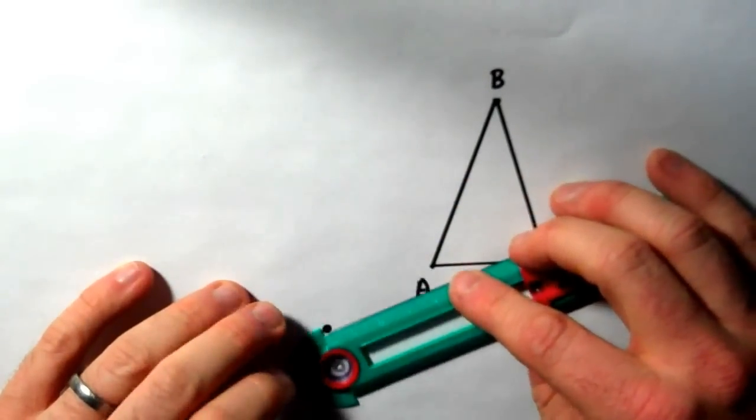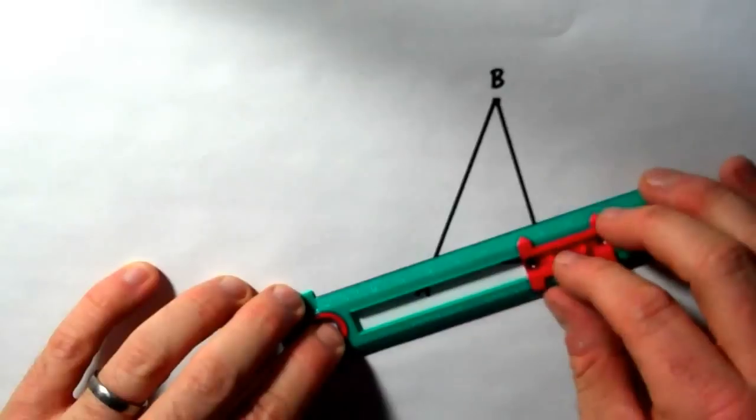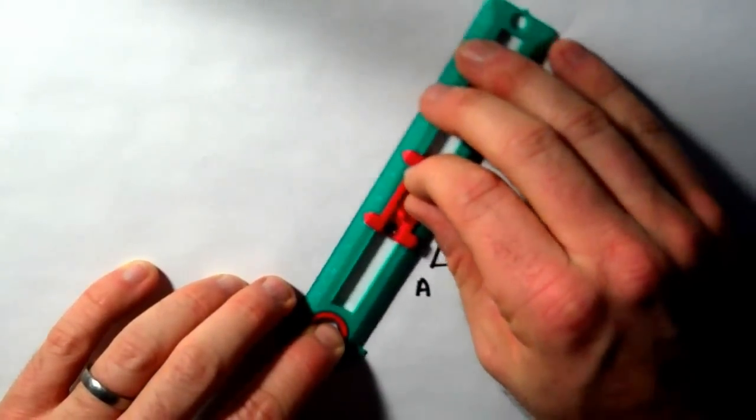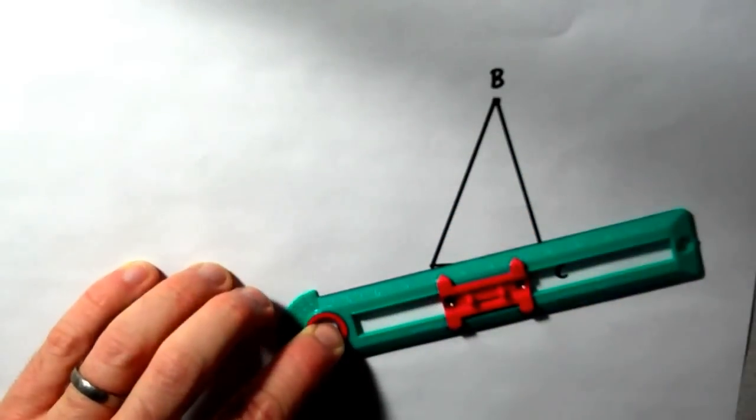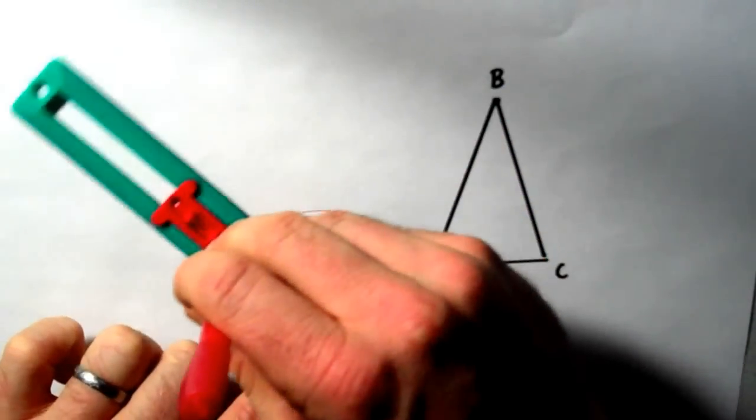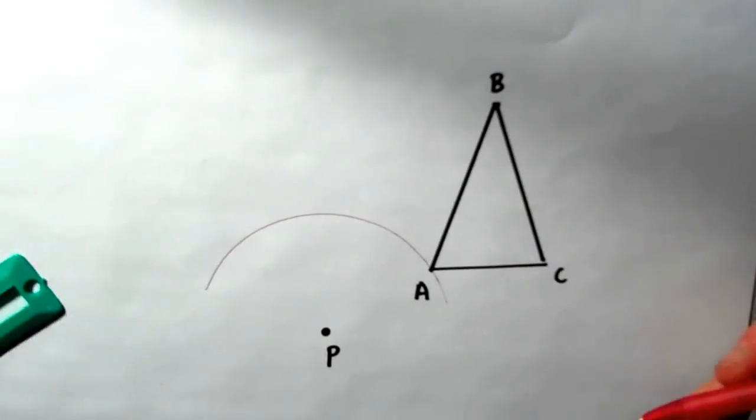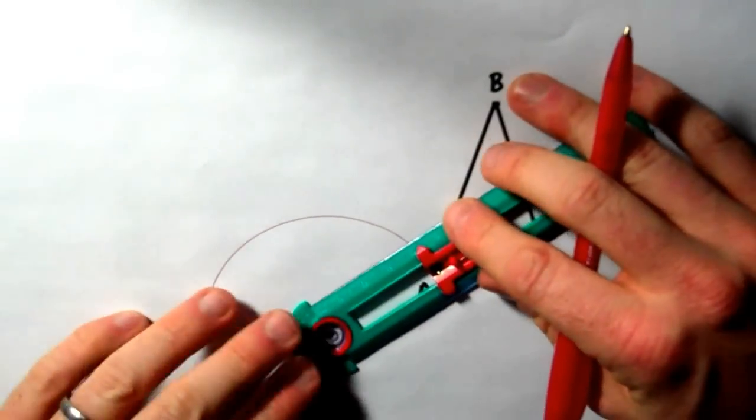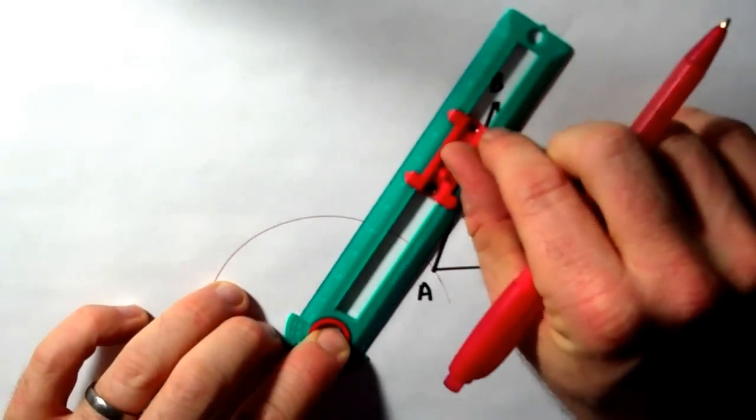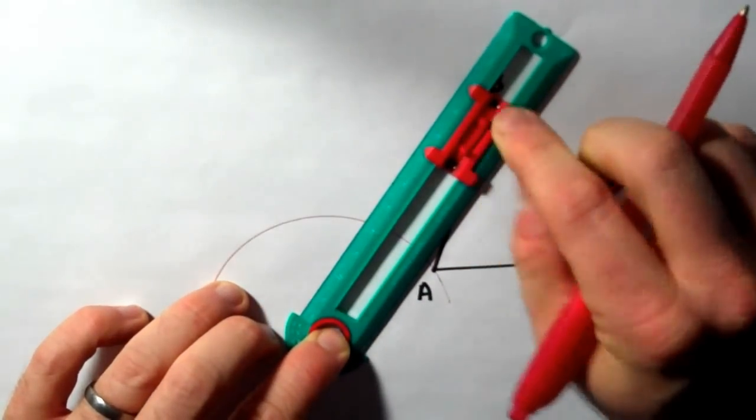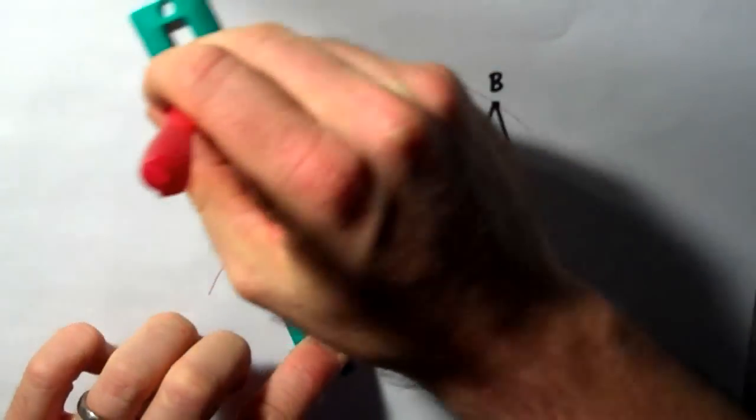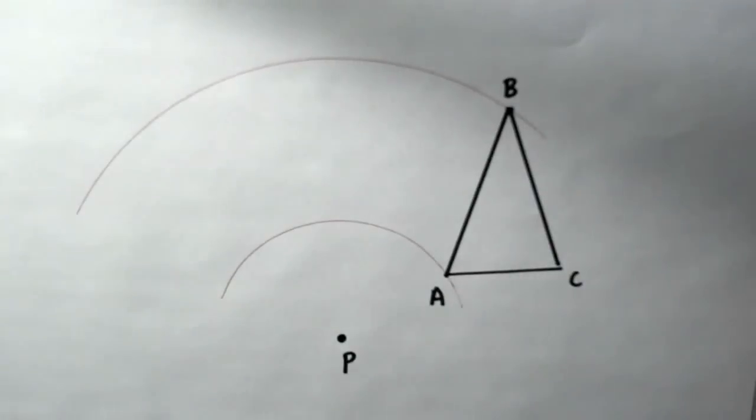I'm going to start by drawing some paths of rotation by putting my point of my compass on point P, which is the center of rotation. And I'm just going to draw an arc right through A. I'm going to bring it around. And then I'm going to do the same thing with B. I'm going to create an arc through B. Okay, so these are the paths of my rotation. Now I just need to figure out how far to go along these paths is 90 degrees.